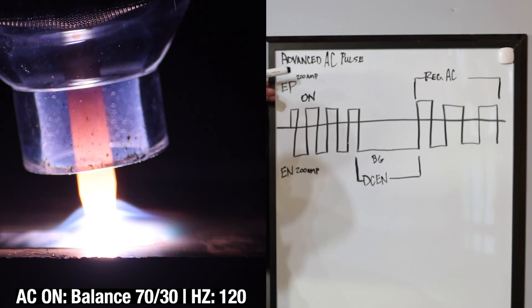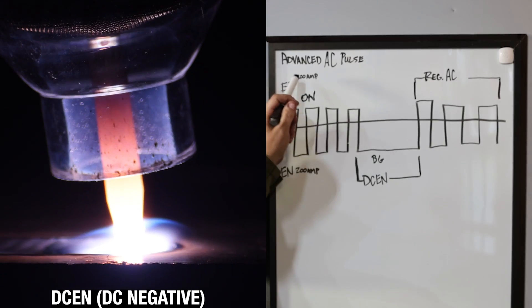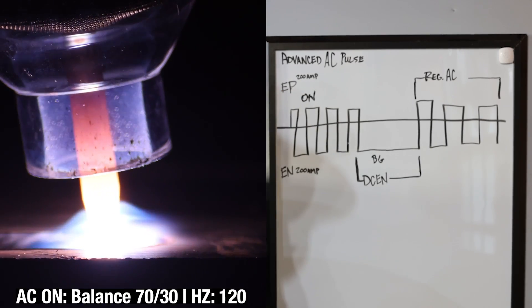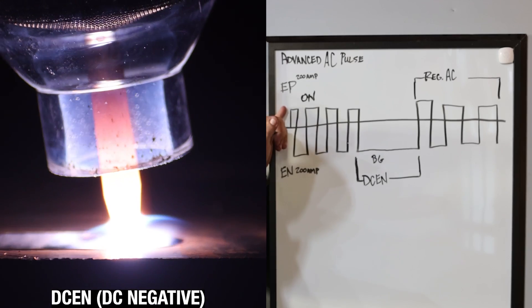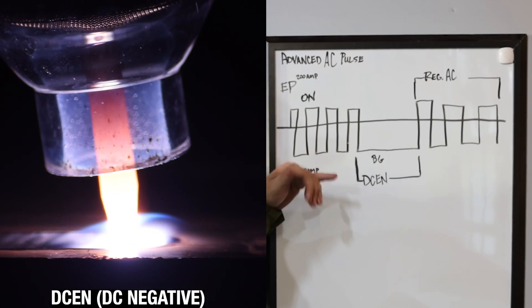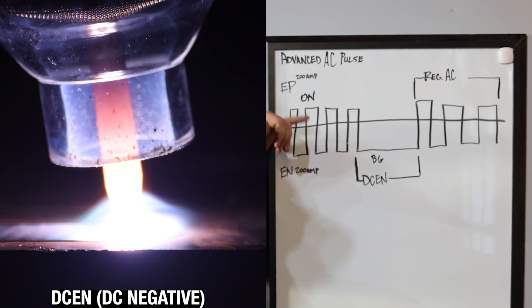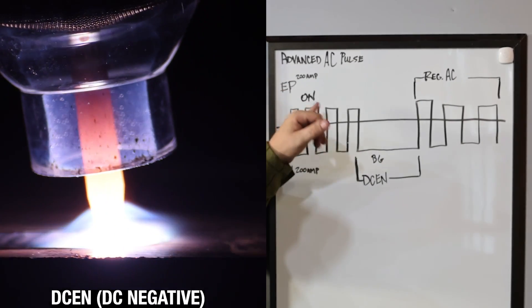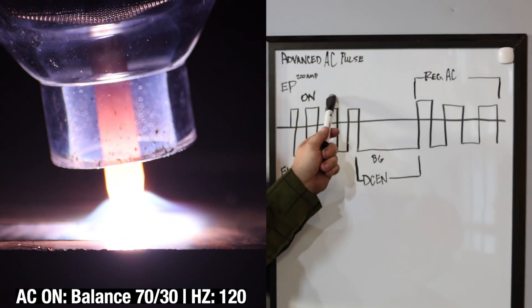Since we're on a 210 EXT, we're just going to call our max amperage on both EP and EN at 200 amps each. So on advanced AC pulse, you're actually switching between your standard AC waveform, which still has your balance. As you can see, I've kind of drawn out here like a 30-35% balance, your advanced square wave, and your frequency settings. That's your on time.